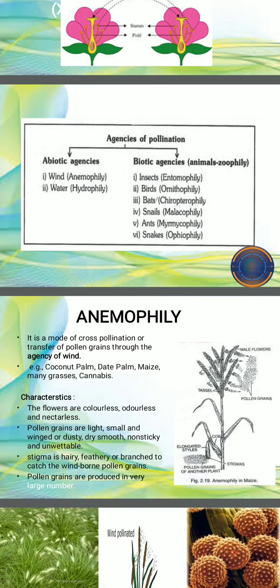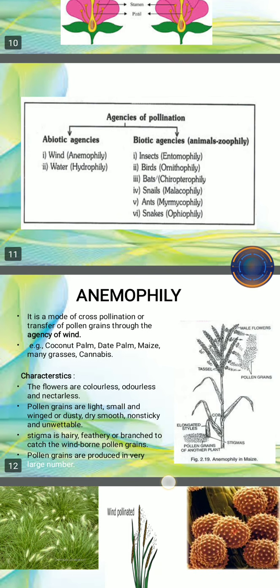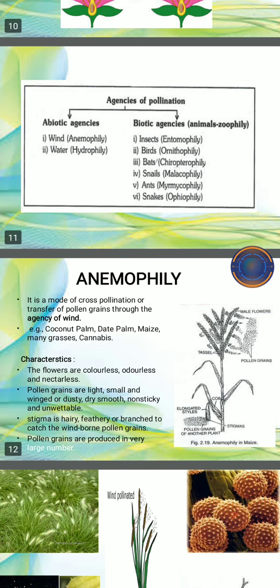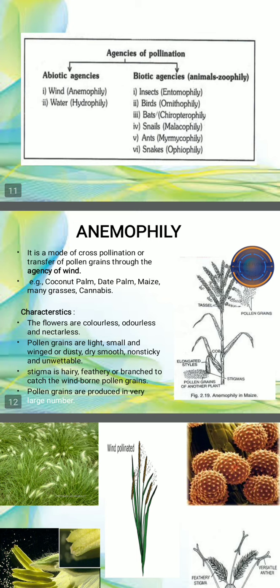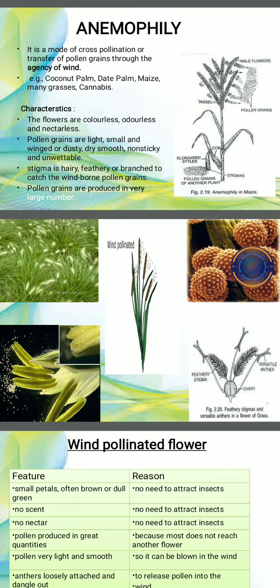First we will study abiotic pollination — that is anemophily, which is pollination with the help of wind. It occurs in coconut, palm, maize, many grasses, and cannabis. The different characteristics of anemophilous flowers are that they are colorless, odorless, and nectarless. Pollen grains are light, small, winged or dusty, dry, smooth, non-sticky and unwettable. The stigma is hairy, feathery, or branched to catch the wind-borne pollen grains, and pollen grains are produced in very large numbers.